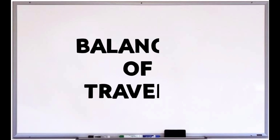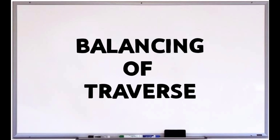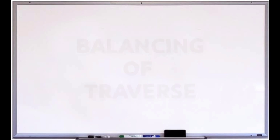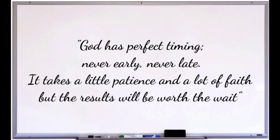This is the end of our topic for today. In short, balancing of traverse is accomplished by applying corrections to latitude and departure. In the case of a closed traverse, the algebraic sum of latitude and departure must be equal to 0. Board exam may be cancelled, but always remember that God has perfect timing — never early, never late. It takes a little patience and a lot of faith, but the results will be worth the wait.